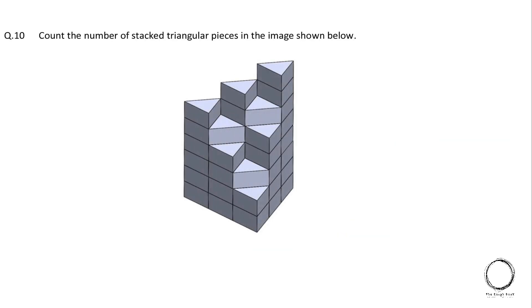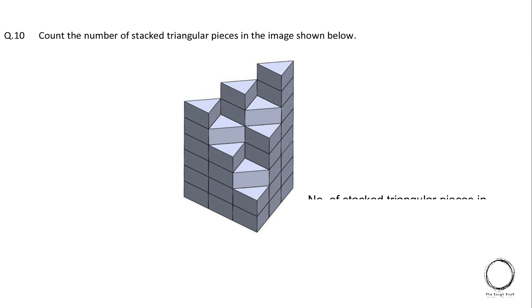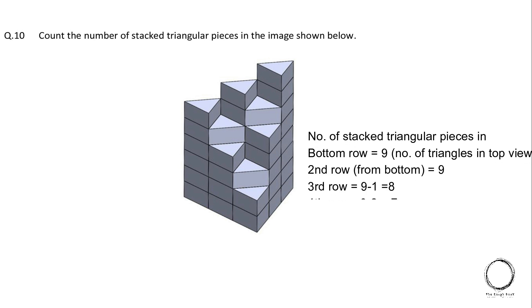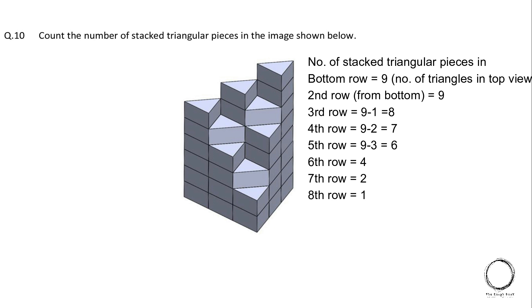Moving on, count the number of stacked triangular pieces in the image shown below. So here let's start with counting from the bottom. Starting with the bottom row equals to 9 number of triangles in the top view. Moving on second row from bottom again 9. Third row 9 and there is 1 less. So 9 minus 1 equals to 8.